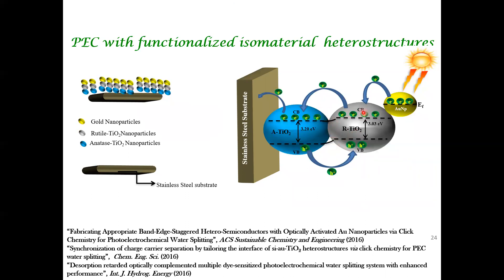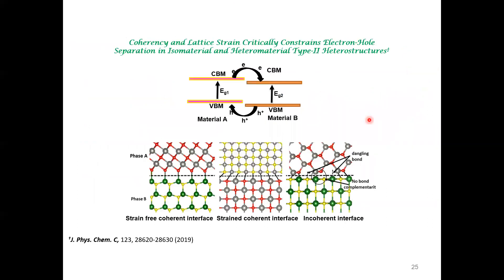For example, we worked with rutile-form TaO₂, where the band edges are aligned in a way that facilitates electron-hole transfer. A gold particle is added because of its plasmonic properties — plasmons can transfer electrons and holes in a particular way. This kind of work is still ongoing worldwide. More recently, we worked on what is called a type-II band arrangement: two semiconductors whose band edges are aligned so the hole transfers one way and the electron transfers the opposite way.